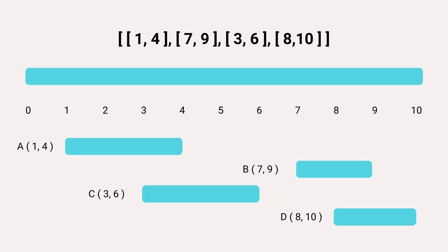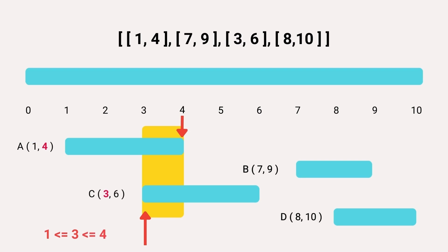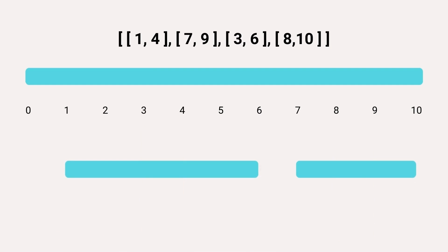Now let's observe these intervals. Interval C overlaps with interval A because C has a start time that is greater than or equal to A's start time and less than or equal to A's end time — so C lies within the range of A. Similarly, intervals B and D also overlap, as D falls in the range of B.